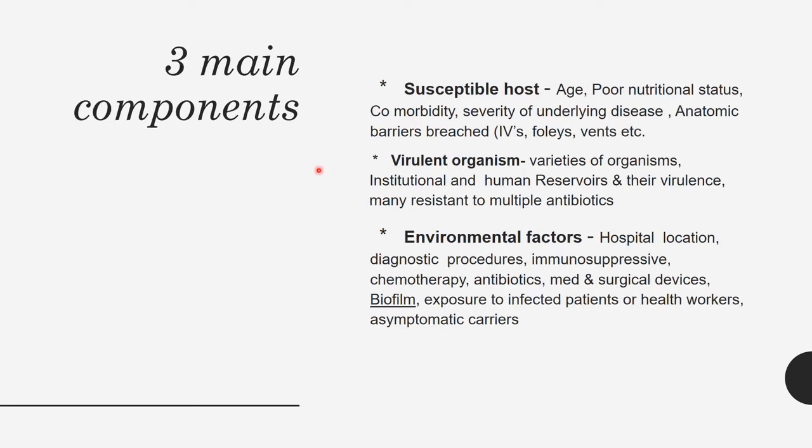There are three main components which decide whether an individual will get a hospital-acquired infection or not. The first is the susceptible host. Age is a very important factor — for example, in COVID-19, people above 50 or older acquire the infection more rapidly than younger or healthier individuals.